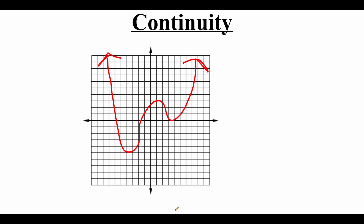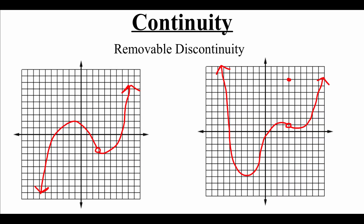But not every graph is continuous. There are functions or graphs that are not continuous. Now there are a few different types of discontinuity that we're going to look at, but the first one is removable discontinuity. Removable discontinuity is basically just a hole in the graph. If we look at this first picture, there's a hole in it — that point is missing. So we would need to pick our pencil up to move over that hole to continue drawing the graph. So that is discontinuous because of that hole.